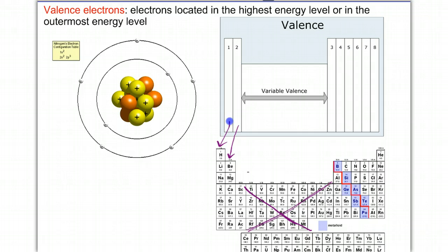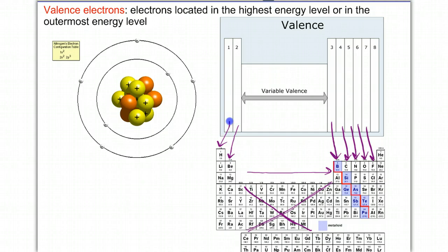Skipping across, the boron family has three valence electrons, the carbon family has four, the nitrogen family five, the oxygen family six, the halogens have seven, and the noble gases have eight — except for helium, which only has two valence electrons. That's an exception.